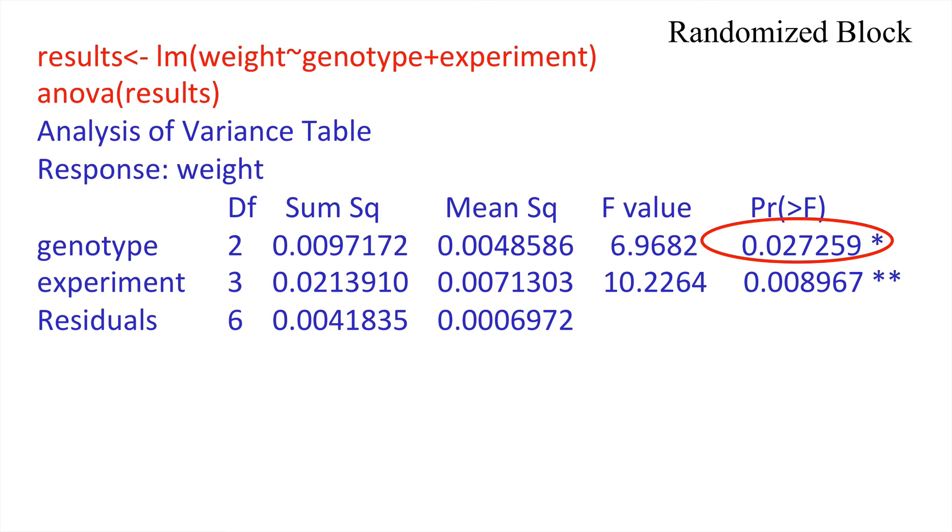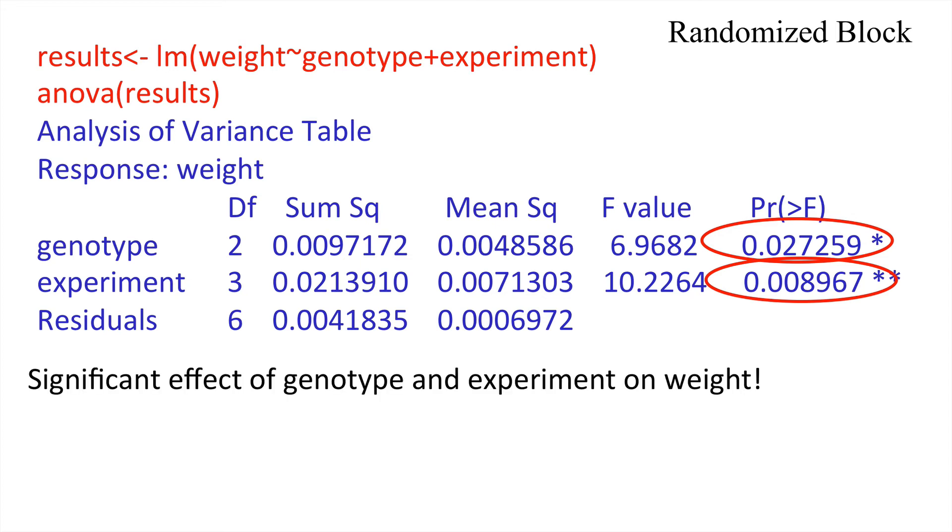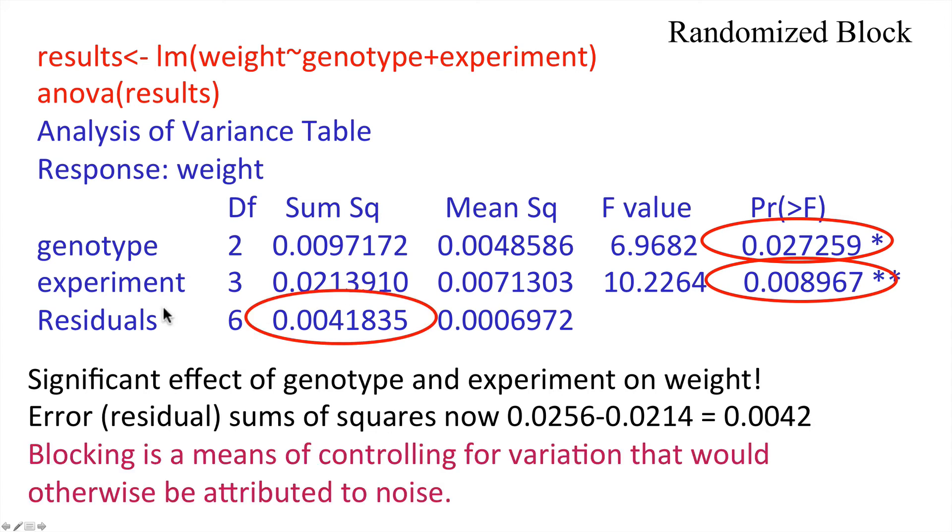So in this case we have an analysis of variance table which shows us that genotype is highly significant in explaining variation in weight. How come it has changed from not significant to highly significant? Well, we have also accounted for the experiment in our data. And the experiment actually explains significant variability. So we have got a significant effect of genotype and experiment on weight. You will notice also that the error sum of squares has reduced to something really very small now. Because the experiment used to be part of the error sum of squares but now we have accounted for it. So what we find here is that this blocking using experiment was a means of controlling for the variability that would otherwise be attributed to noise.